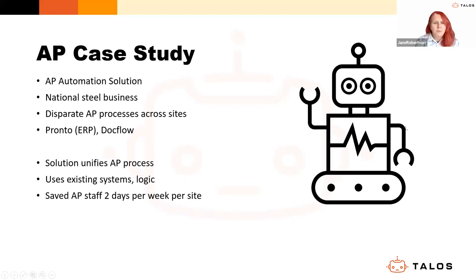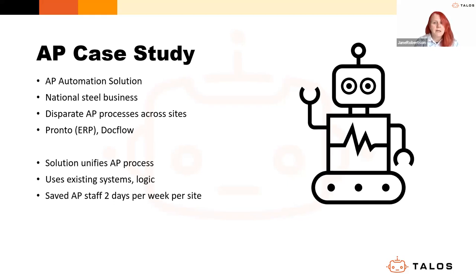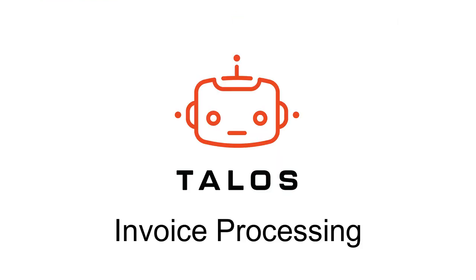Now, robots in action. The first use case is an accounts payable automation solution. This client is a national steel manufacturer that wanted to automate invoice processing to solve the issue of disparate accounts payable processes across 60 sites. The technology in-house is Pronto for ERP and DotFlow as their document management system. We were able to unify the accounts payable process using their existing systems and logic, and the automation has already saved accounts payable staff two days per week per site — being rolled out across all 60 sites.